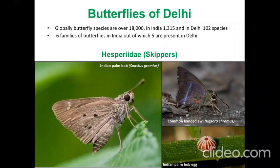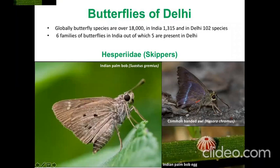Moving on to the butterflies of Delhi — as I mentioned, there are about 102 species, which is about 10% of what you can see all over India. Out of the six butterfly families, we only have five here; the metal mark family is absent. Within the Hesperidae, not many species are found in Delhi and there's a lot of confusion over species-level identification. The common ones include the Indian palm bob, because palms are planted all over, and the common banded owl, because departments in Delhi like planting karanj — cows don't eat it, so it makes a good avenue tree — which helps the population of this butterfly.